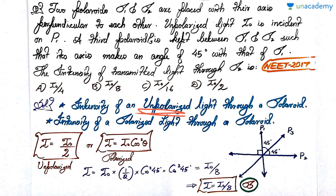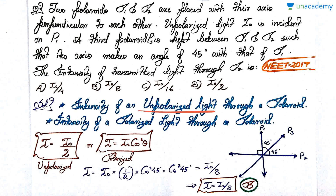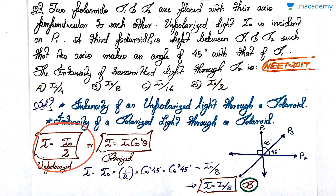When unpolarized light — in which waves are spread equally in all directions — passes through a polaroid, you get only half the intensity; the other half is blocked. In the second case, when polarized light passes through a polaroid, only the I·cos²θ factor passes through. So I becomes I₀·cos²θ, where θ is the angle between the polarization direction of the light and the axis of the polaroid.